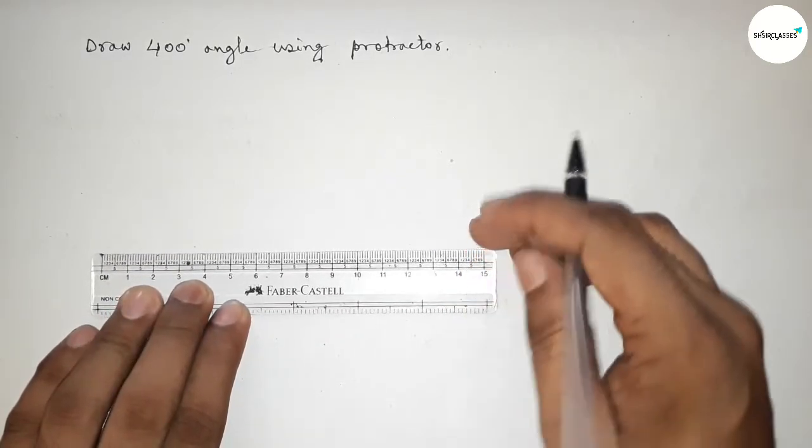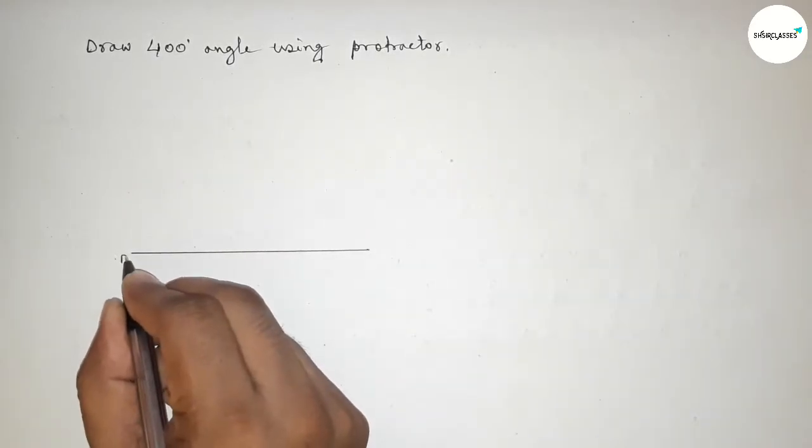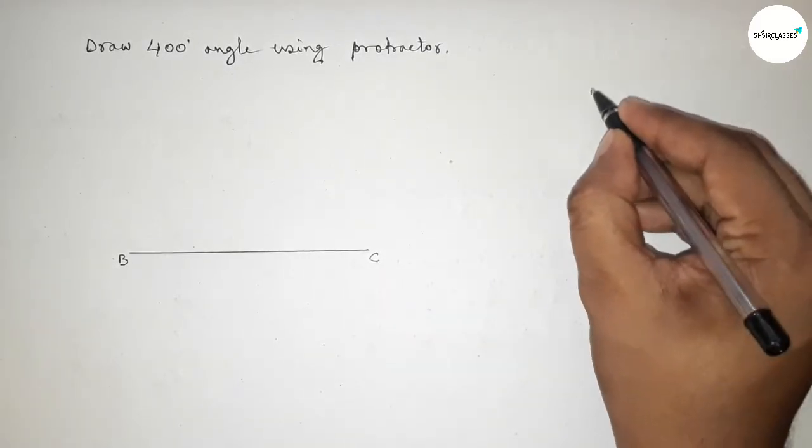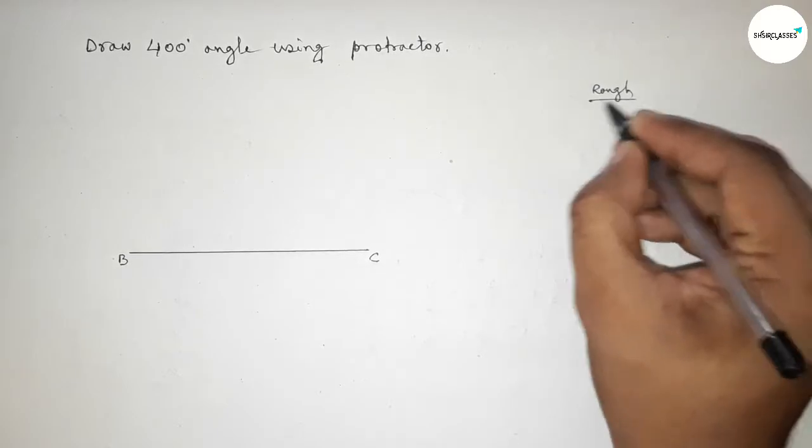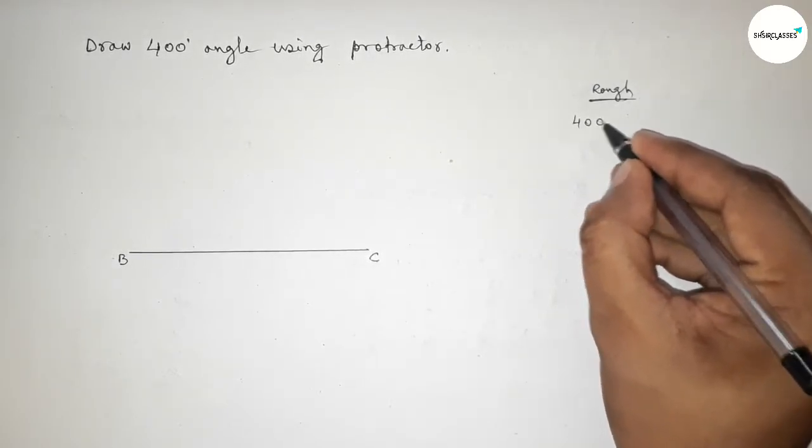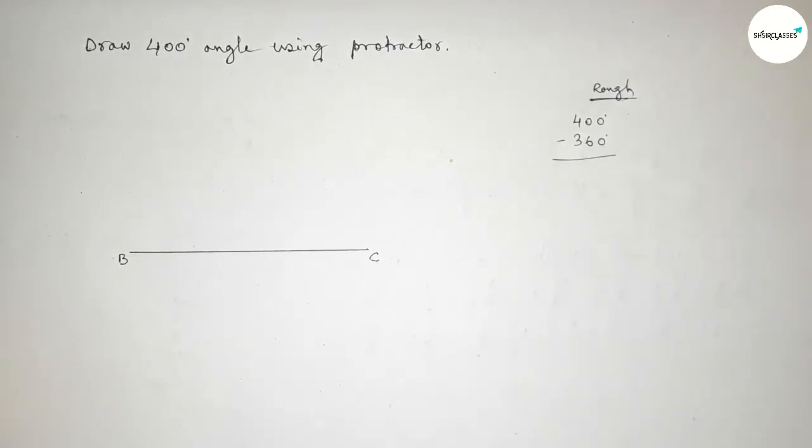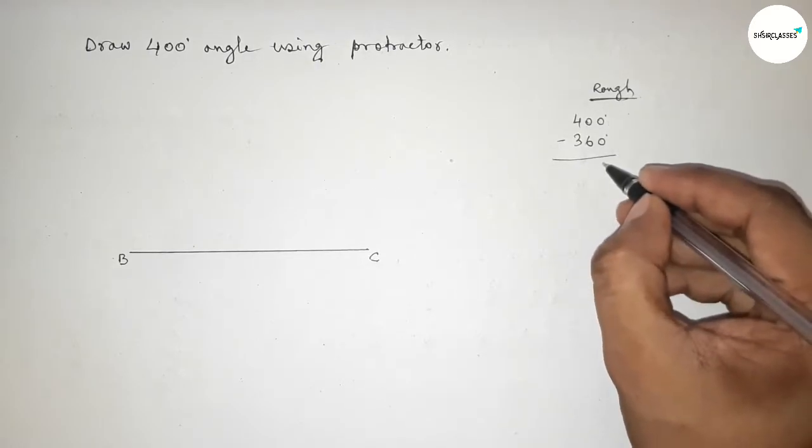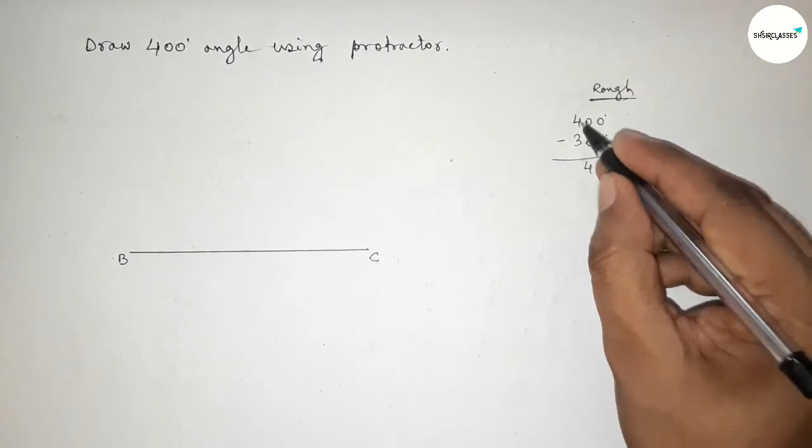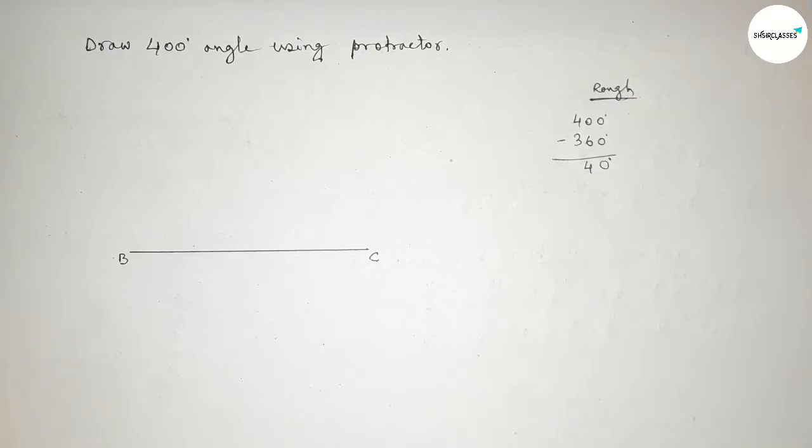First drawing here a line and taking here point B and here C. Now roughly discussing here some calculation. So first, if you subtract 360 degree angle from 400 degree, so now subtracting this, this is zero and this is four, and this is obviously zero. So now we have to draw a 40 degree angle on the point B by using a protractor.